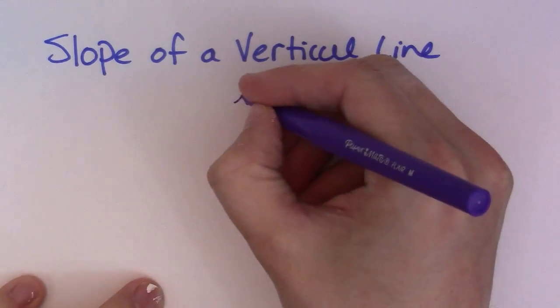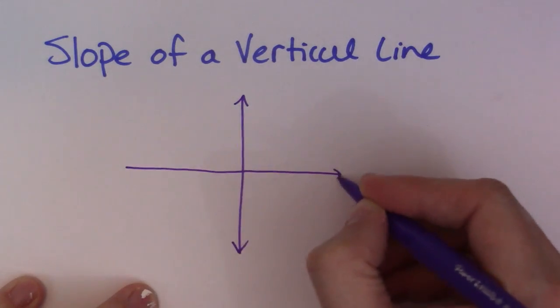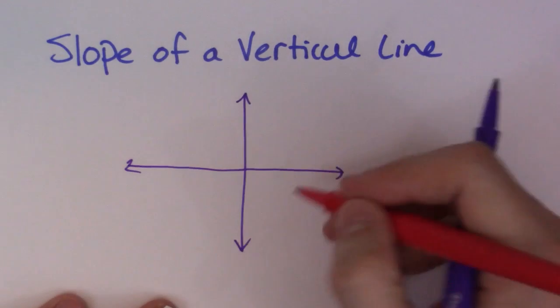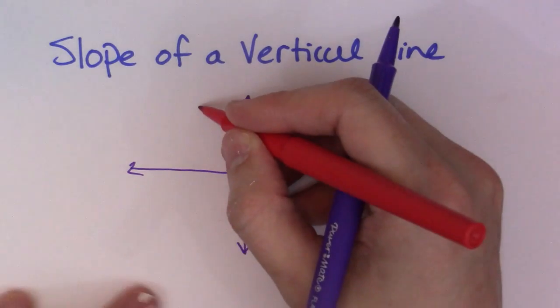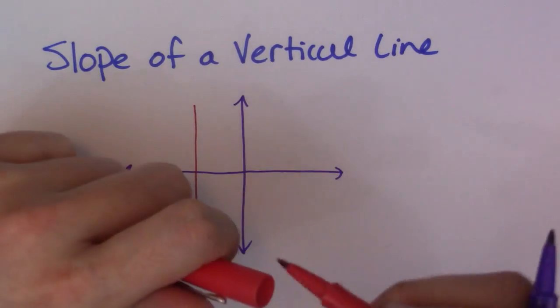So let me draw you a vertical line. Alright, so a vertical line looks like this. This is the xy axis, I'll just draw it over here. Let's make it negative. Alright, so that's a vertical line.